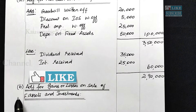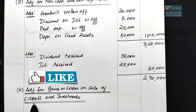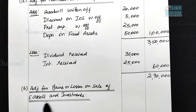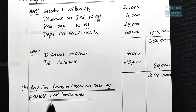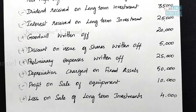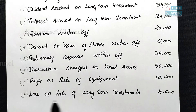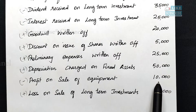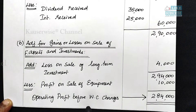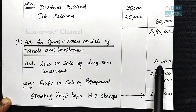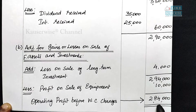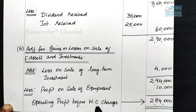Now we do the second adjustment: gain or losses on sale of fixed assets and investment. Any profit or loss on sale of assets or investment has to be properly adjusted — gain needs to be subtracted and losses need to be added back. From the problem, we have profit on sale of equipment and loss on sale of long-term investment. So, loss on sale of long-term investment is added back and profit on sale of equipment is subtracted. The final answer is 2,84,000. This is the operating profit before working capital changes.